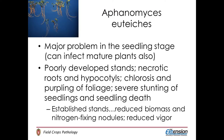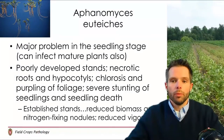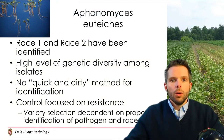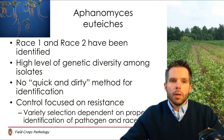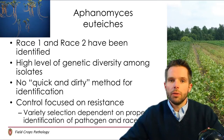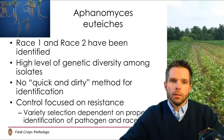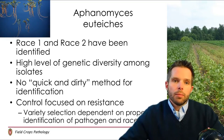Over time we will eventually see stands just declining in a sort of slow process. Established stands will oftentimes also have reduced biomass, and nitrogen-fixing nodules won't be present on the root systems, and you'll see an overall reduced vigor. We do have two races of Aphanomyces — race one and race two — and more recently we may have identified a third race, although at very low frequency in fields. Race one is probably the race that occurs the most, followed by race two.